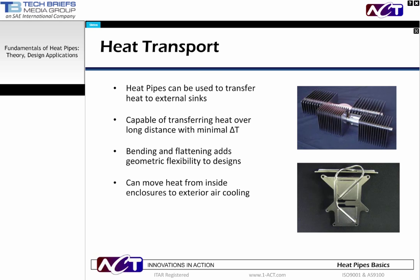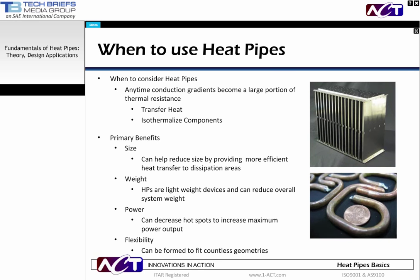One of the key benefits of heat pipes is heat transport. Heat pipes can be used to transfer heat to external sinks. They are capable of transferring heat over long distances with minimal delta T. Typical heat pipes can transfer heat 8 to 10 inches; gravity-aided and other specialized heat pipes can transfer over longer distances. The typical delta T is about 2 to 5 degrees C over the length of the pipe. Bending and flattening enables increased geometric flexibility. Heat pipes can also be used to move heat away from the inside of an enclosure to exterior air cooling without subjecting the components to the outside environment.